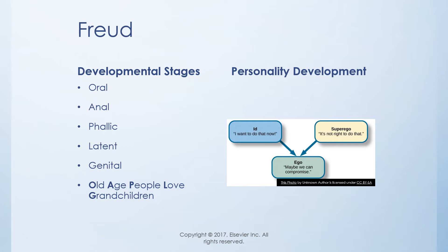The latent stage is equivalent to the school-age child, ages 6 to 12, where the child starts to require some privacy — for example, wanting to cover up or being more concerned about privacy. In the genital stage, which corresponds to adolescence, there is a focus on genital function as it relates to sexual relationships and acquisition of a mate.